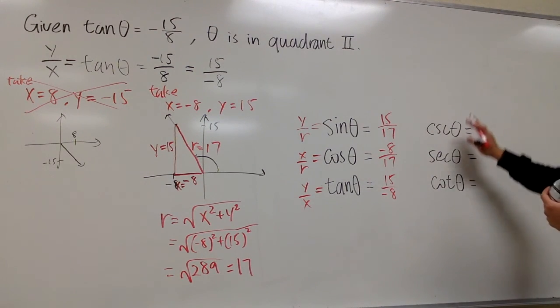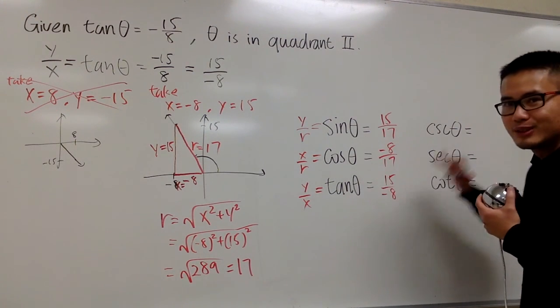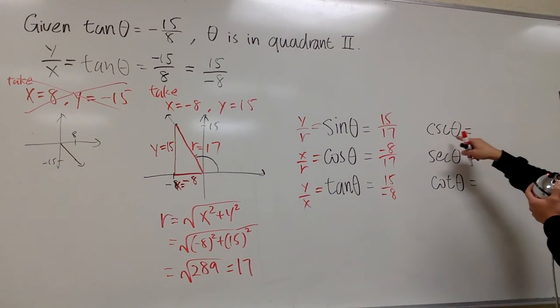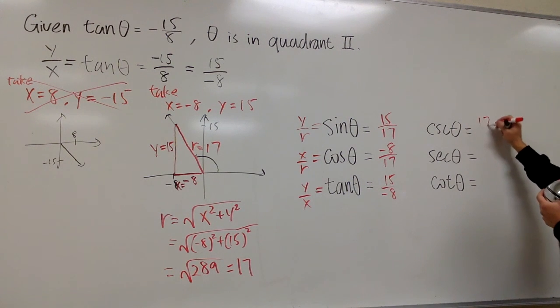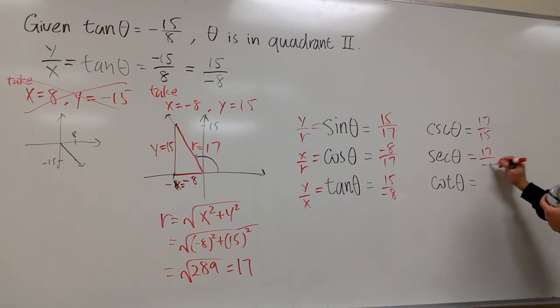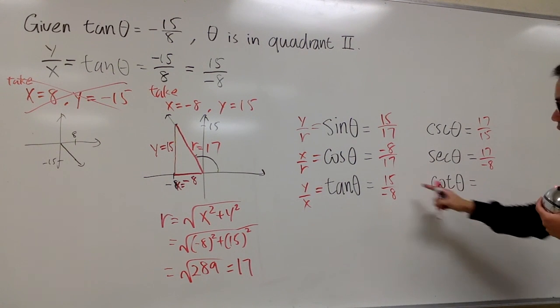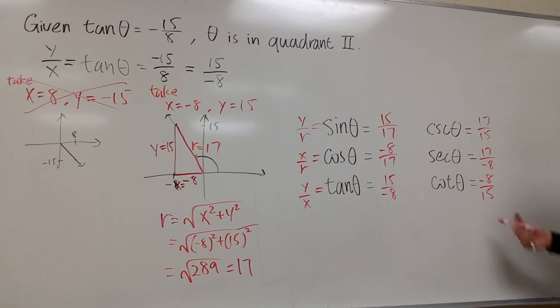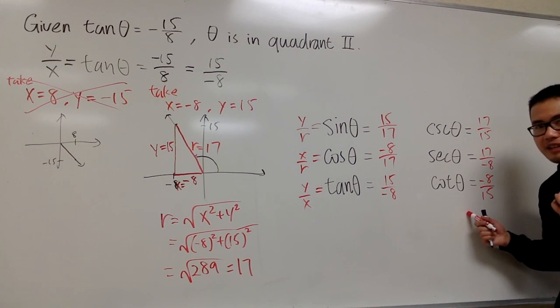And now we can just do the reciprocals of these to get this. Cosecant theta, we have 17 over 15. Secant theta, we have 17 over negative 8. For cotangent theta, we have negative 8 over 15, and this right here is it.